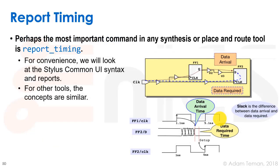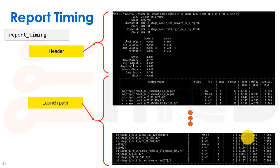The most important command in our tools is probably the report_timing command. I'll use the Stylus Common UI syntax now used by both Genus, Innovus, and Tempus, though similar reports are shown in tools like Design Compiler and ICC. The report shows the arrival time of the data, the required time, setup and hold, and the various things we've discussed, presented as a list.